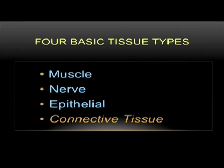Connective tissue is one of four types of biological tissue in traditional classifications, the others being epithelial, muscle, and nervous tissue. It is characterized by an abundant extracellular matrix encasing relatively few cells. The various combinations of elements in this extracellular matrix give the tissue its character, resulting in different kinds of connective tissue.